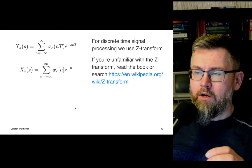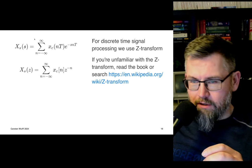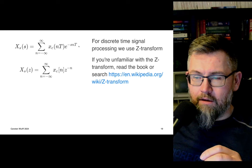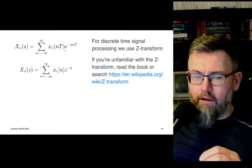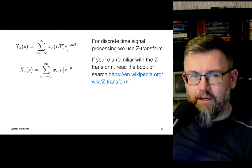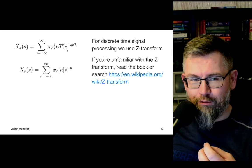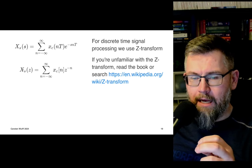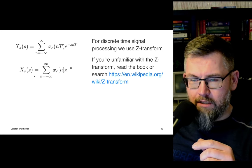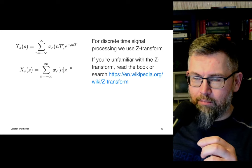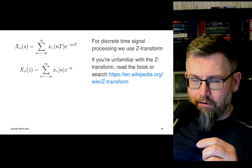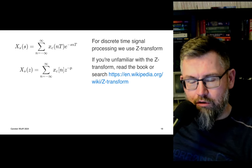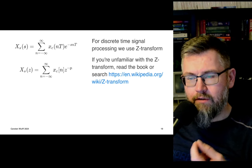Continuing on discrete time: instead of writing out the time-shifted spectrum of the original analog signal every time, we use the Z-transform. We write e to the power of minus s·n·T as z to the power of minus n. Z to the power of minus n is quite useful because it gives a direct indication of the delay on that signal.